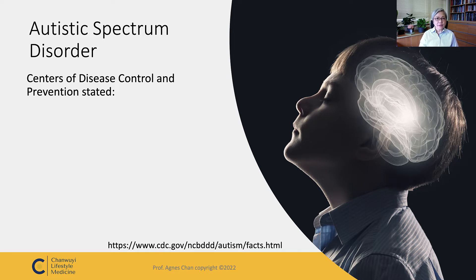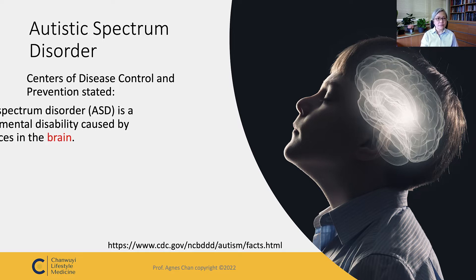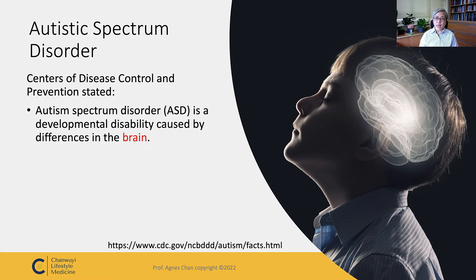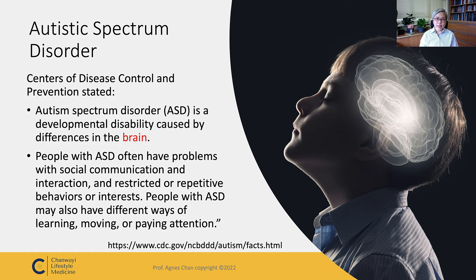The Center for Disease Control and Prevention states that autistic spectrum disorder, ASD, is a developmental disability caused by differences in the brain — a developmental neuropsychological problem. People with ASD often have problems with social communication and interaction, and they have restricted and repetitive behavior or interests. People with ASD may have different ways of learning, moving, or paying attention.